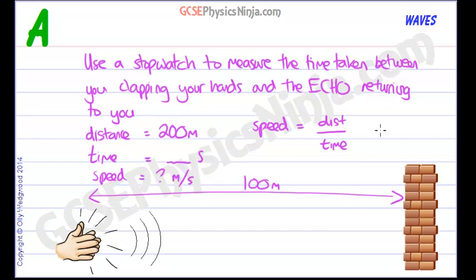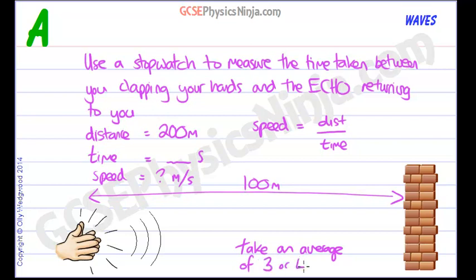You can plug the values into the equation to find the speed. You might want to do this several times and take an average of three or four trials. The reason we do that is to reduce the random error associated with our reaction times, since the echo returns quite quickly. Taking an average reduces that error. That's a simple experiment to measure the speed of sound in air.